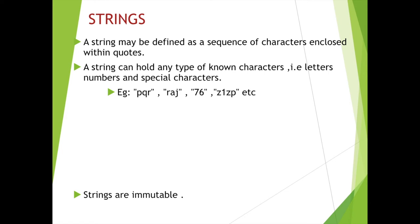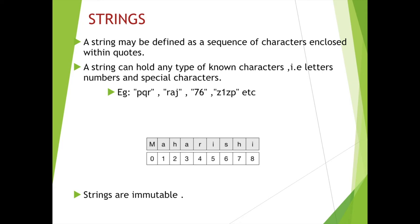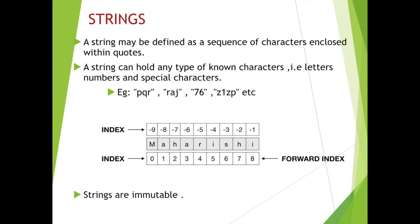Strings are immutable. Let us say we take the string 'Maharishi'. Each character in memory has an index. From left to right is the forward index, starting at 0. So M is at index 0, A is at index 1, and so on. There is also a backward index from right to left, starting at minus 1 and ending at minus n. Immutability means that after a string has been assigned a value, we cannot change individual characters of the string.